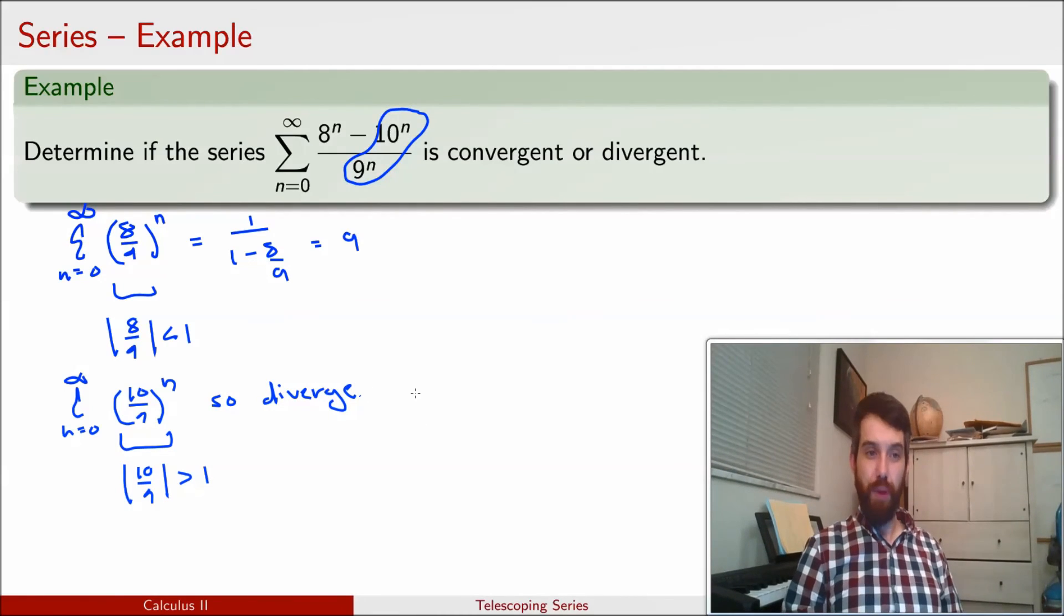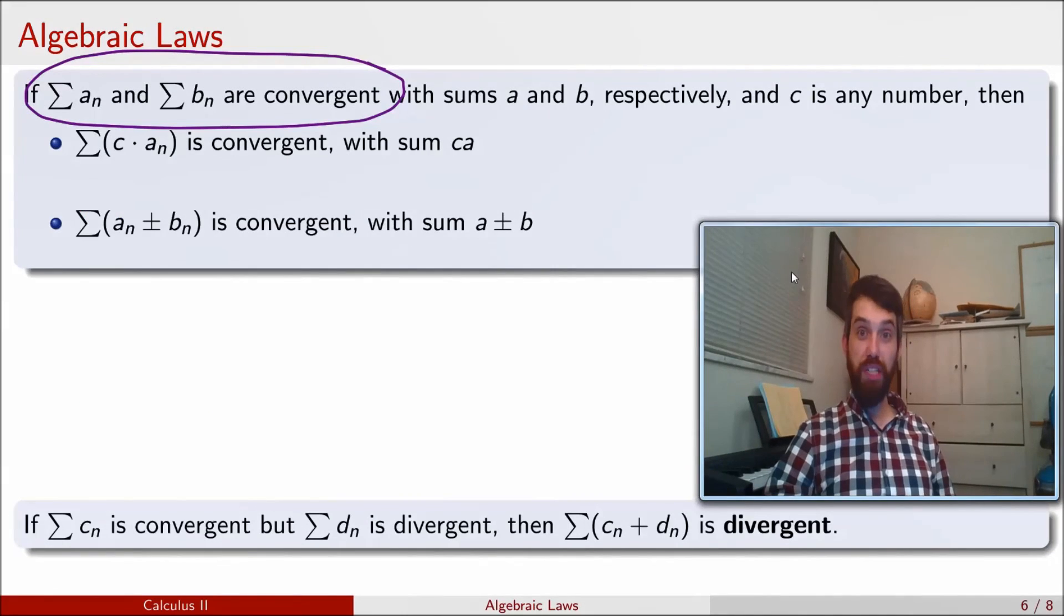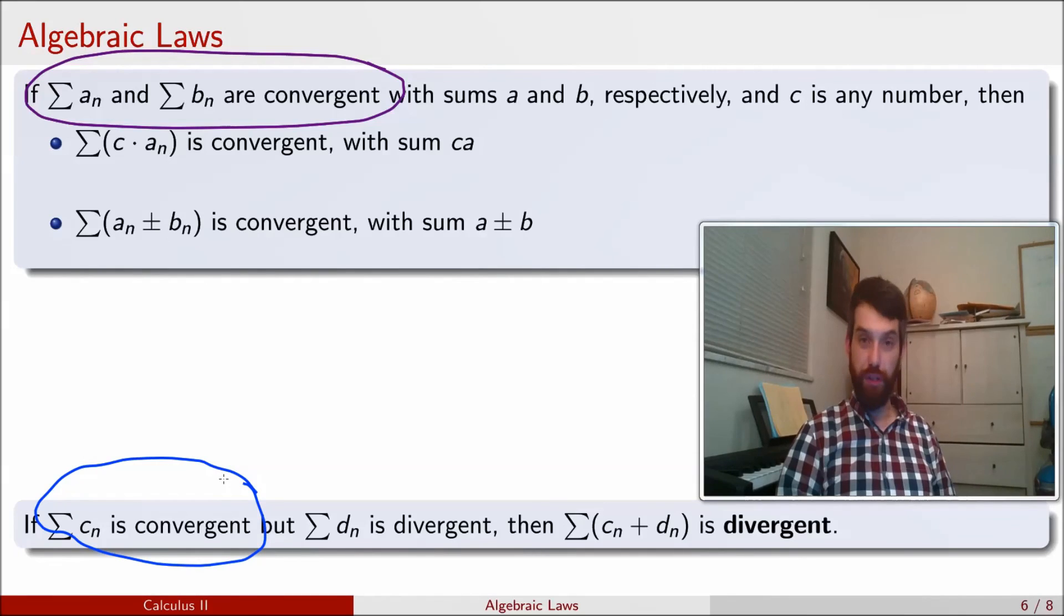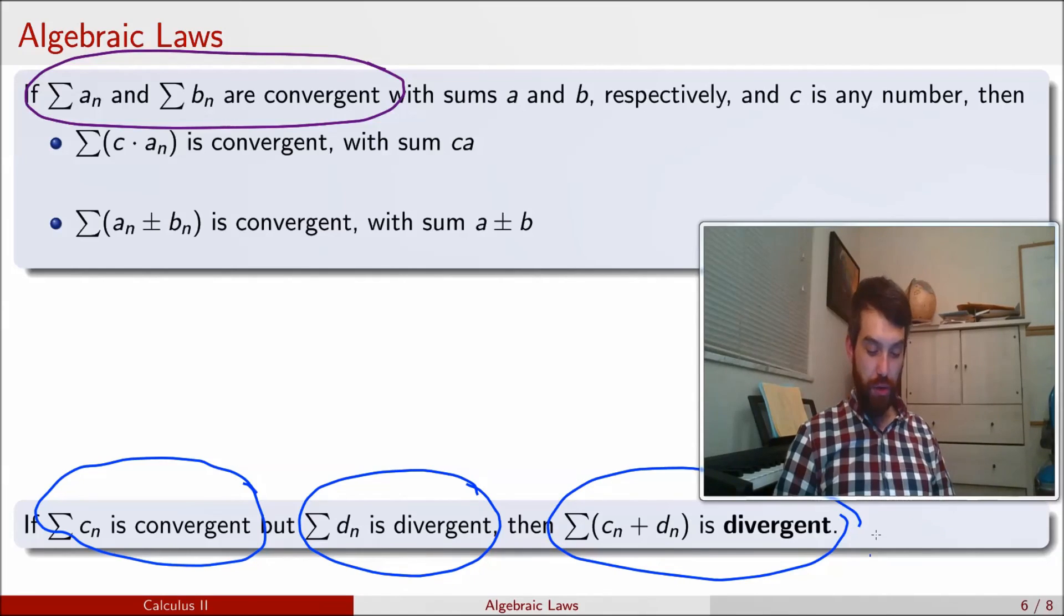So I'm doing the geometric series in both cases. It's just in one case, the ratio is less than 1, and the other case, the ratio is greater than 1. So, returning to the previous slide for a moment, this bottom case is what I'm in. I've got one series which is convergent. I've got a second series which is divergent, and therefore, the sum of my two different series is going to diverge.